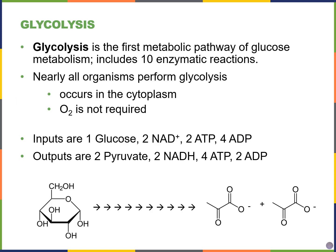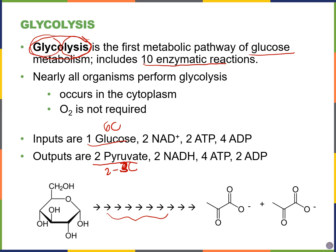The first step of cellular respiration is glycolysis — the lysis of glucose. We take glucose, a six-carbon molecule, and chop it in half to form two three-carbon pyruvate molecules. This happens in 10 small steps to capture energy and minimize heat loss. The inputs include glucose, NAD+, ATP, and ADP — energy is required. The outputs include pyruvate (also known as pyruvic acid), NADH, some ATP, and ADP.